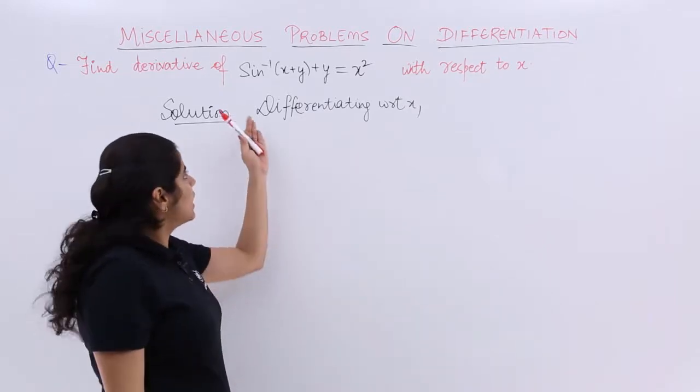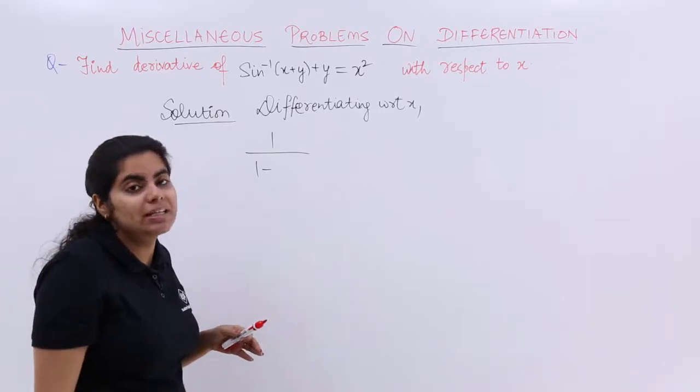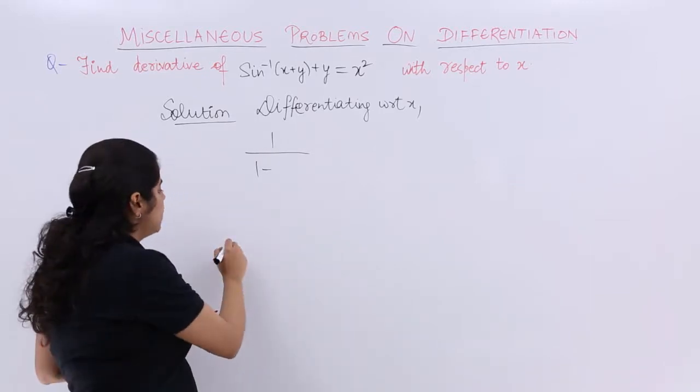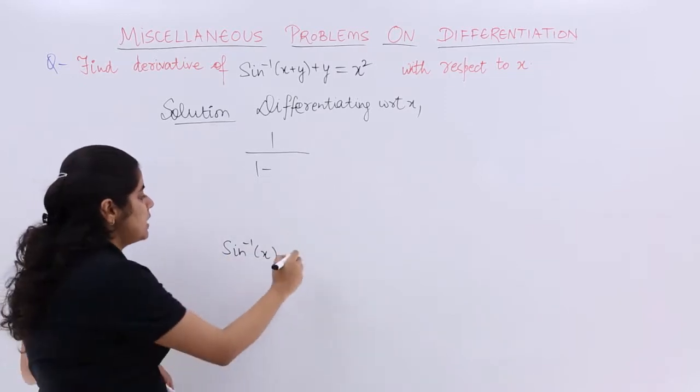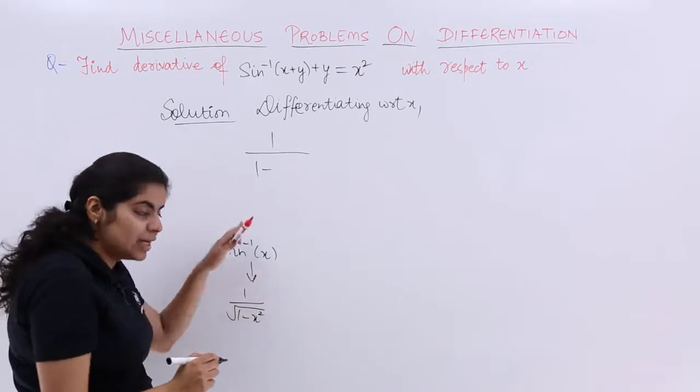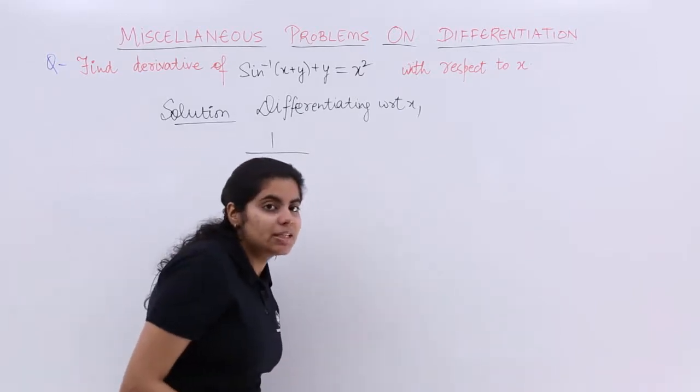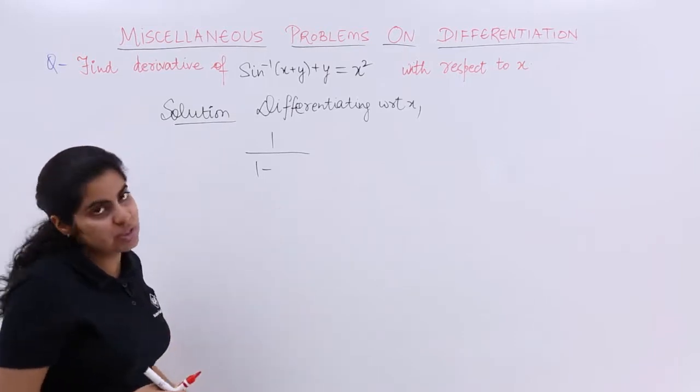It is nothing but sin inverse something. So what is the differentiation of sin inverse? 1 upon under root 1 minus x squared. Remember, the differentiation of sin inverse x was 1 upon under root 1 minus x squared. That is what we are going to follow. This is the formula that you should know in order to go about this question.